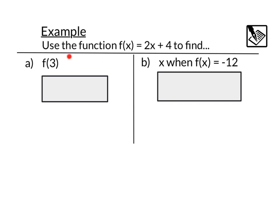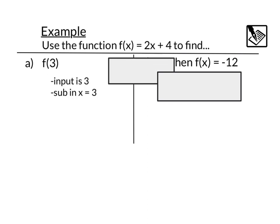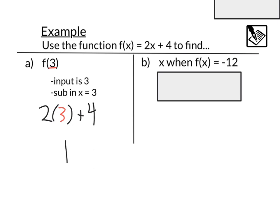Let's look at an example using these functions. Use the function f of x equals 2x plus 4 to find first f of 3. So what this f of 3 means is that basically we're going to take an input of 3, that is to substitute in x equals 3 right into our function. So if we did that, we'd have f of 3 equals 2, and then instead of x, that's our input of 3, and then we have plus 4, which 2 times 3 is 6, plus 4 would be 10. So f of 3 would equal 10.